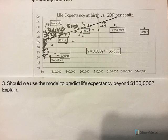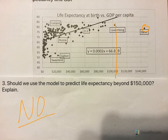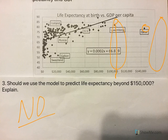Should we use the model to predict life expectancy beyond $150,000? Well, Qatar is by itself at about $145,000. Luxembourg is the next closest at $102,000. So only two countries are above $100,000. So beyond $150,000? No. We don't have enough data to really show that we can be accurate predicting out there. I don't even know that we're really very accurate at the $100,000 mark. Look at Qatar over here — we don't even see the life expectancy of what it should look like with Qatar. That's how poor that data point is.